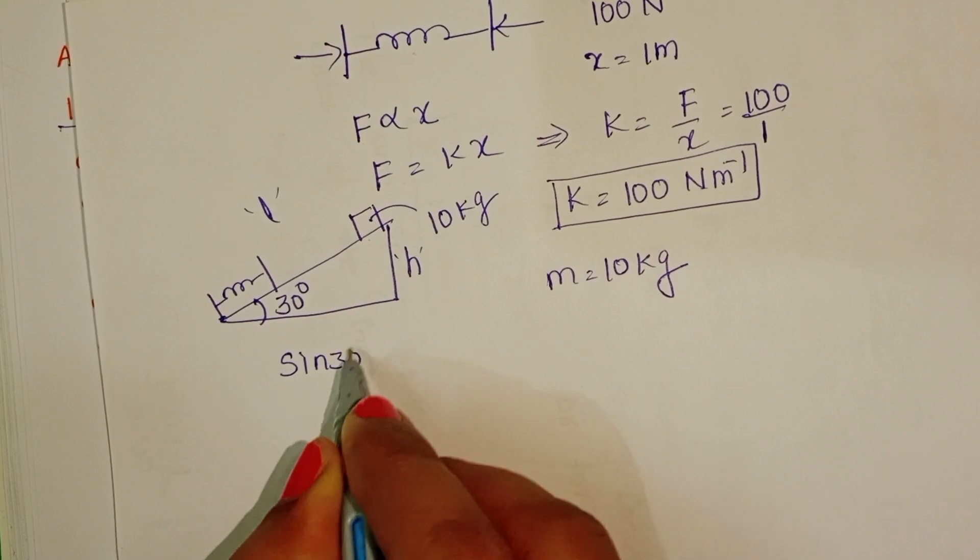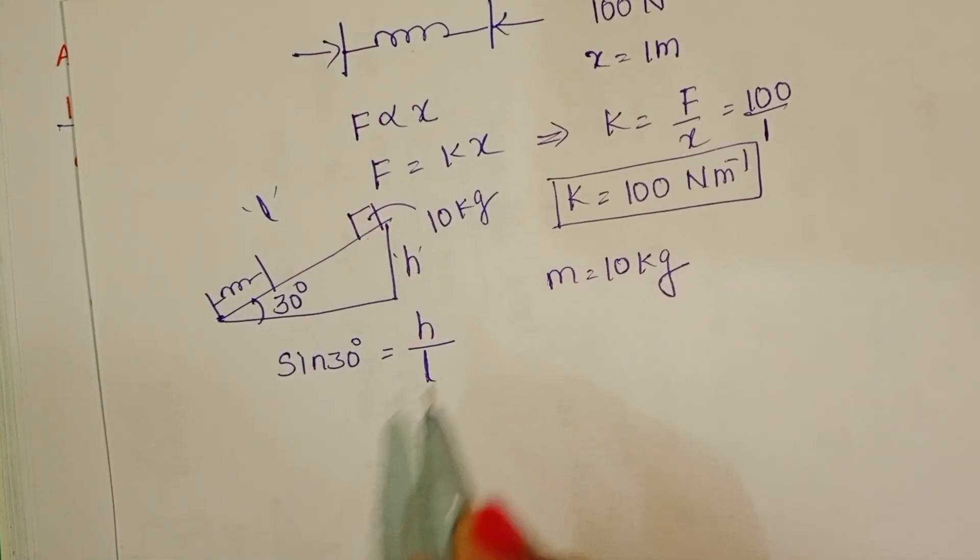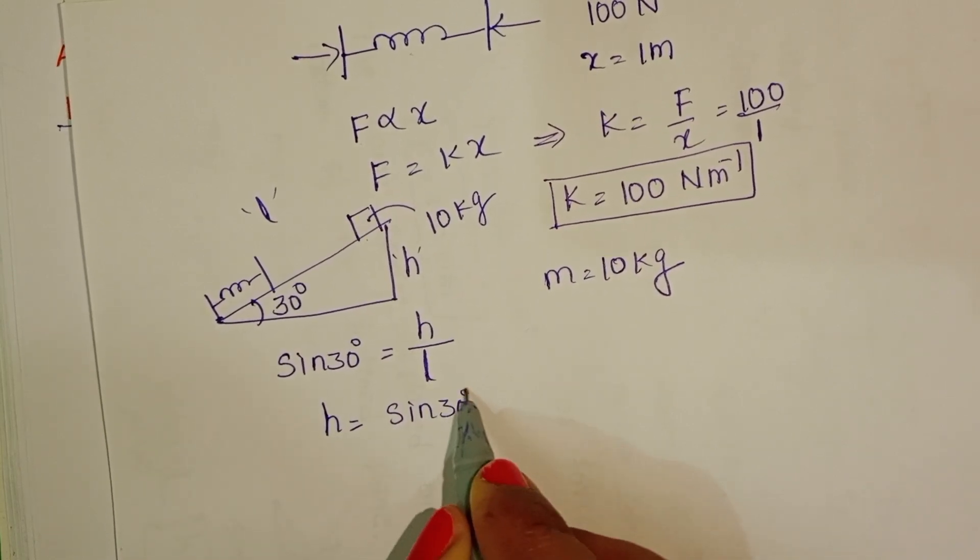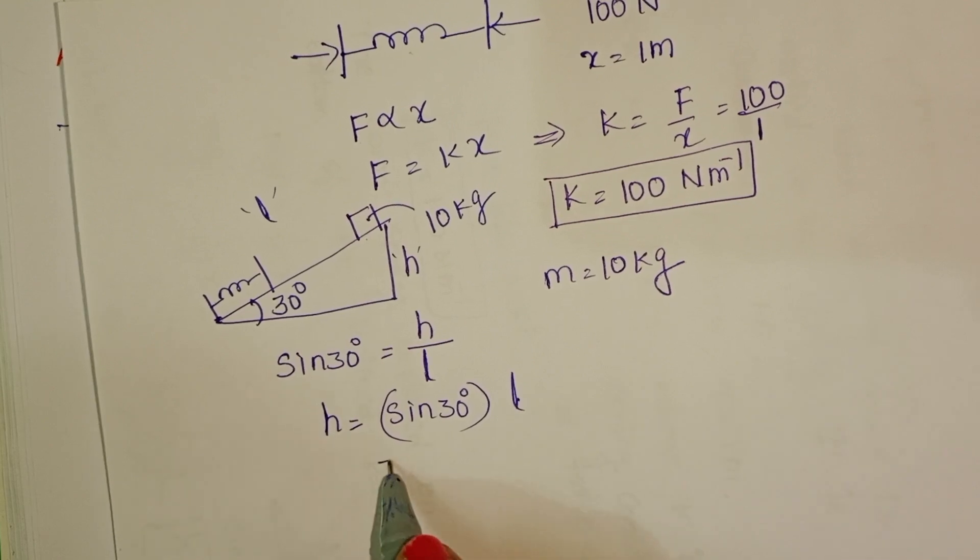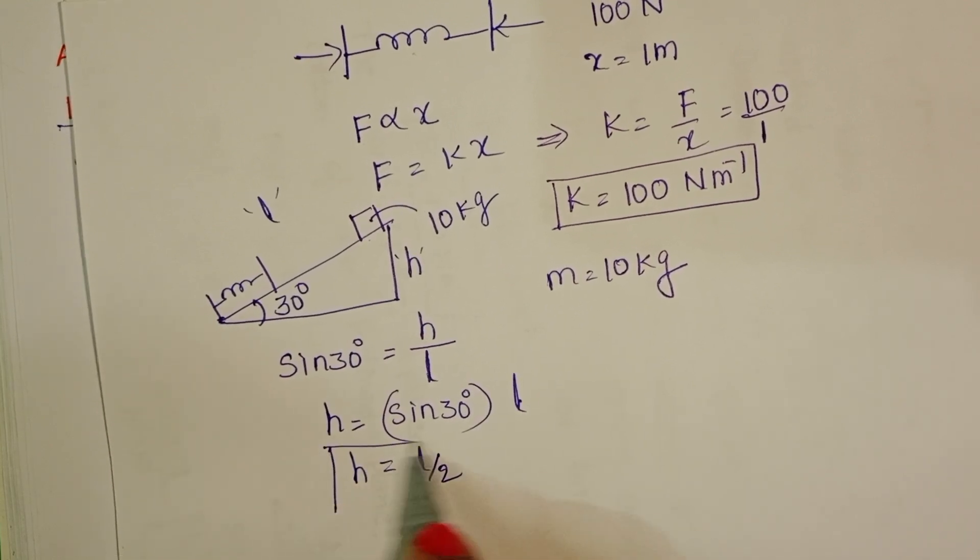sin 30 equals opposite side h by hypotenuse l. h equals sin 30 times l. sin 30 degrees value is 1 by 2. Then h equals l by 2.